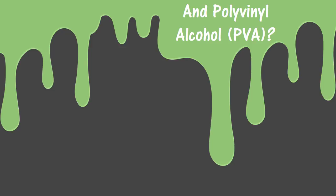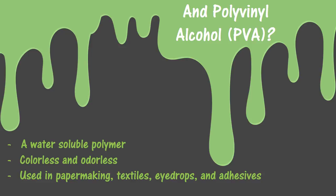What about polyvinyl alcohol? We said polyvinyl alcohol was in our flubber mixture too. It is a water-soluble polymer — it's colorless, odorless, and it's used in paper making. You pulverize wood and trees into a powdery consistency, add water, and then add PVA, which essentially glues all those little flakes of tree together to make paper. It's also used in textiles, fabrics, eye drops, and adhesives. We will be using the adhesive version of PVA to make flubber today.